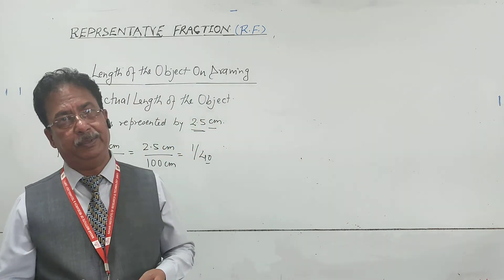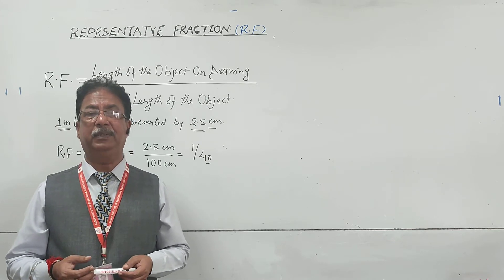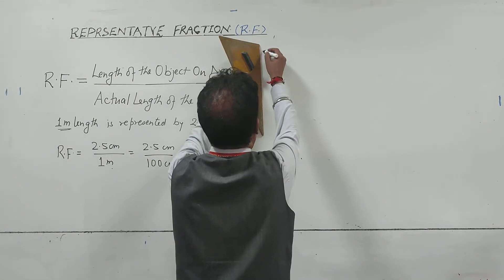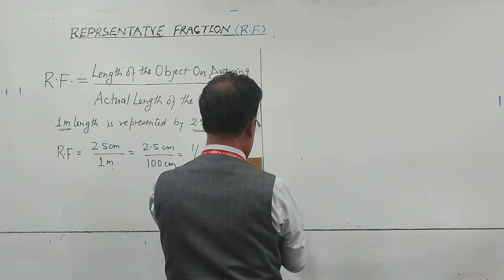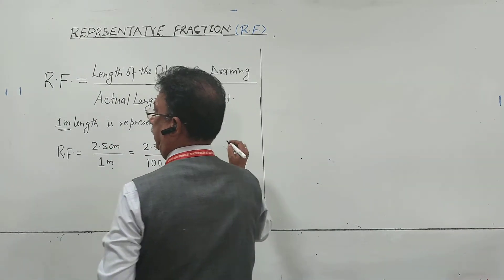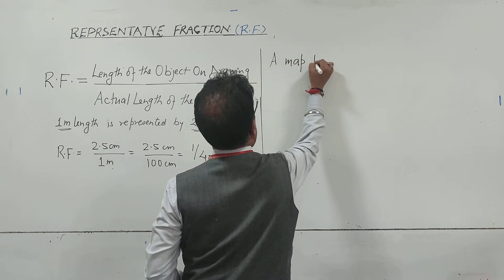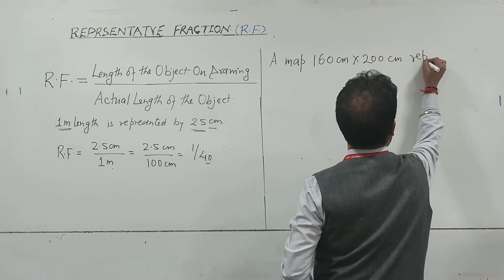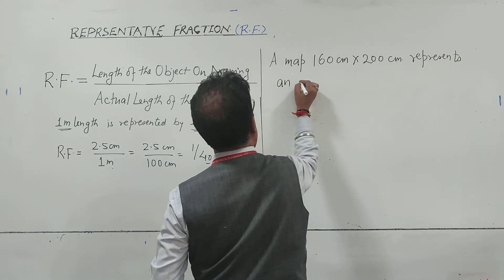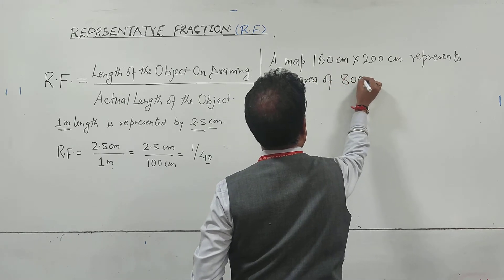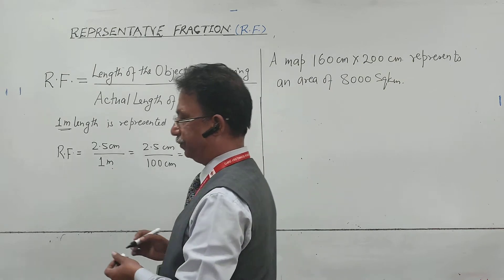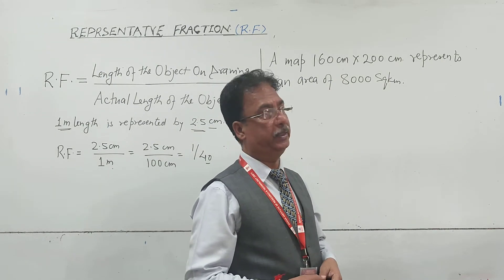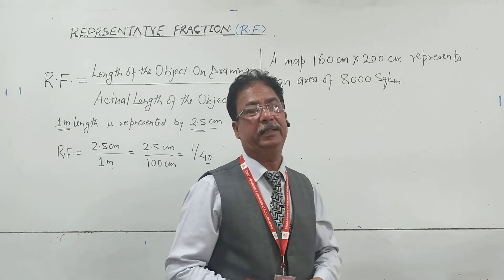Many times the proportion will be given in linear form, but many times it will be given in a different form. Another case: suppose a map of 160 centimeter by 200 centimeter represents an area of 8000 square kilometer. So in that drawing the size of the map will be 160 cm by 200 cm, and in actual that area will be 8000 square kilometer.